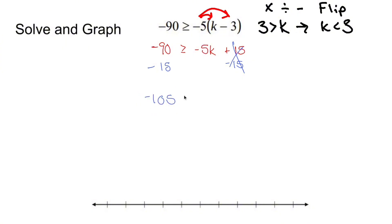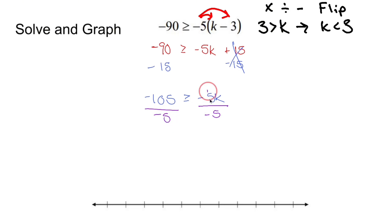Is k all by itself? No — negative 5 is being multiplied to k. Divide both sides by negative 5. When you divide both sides by a negative, flip the sign. Negative over a negative is positive: 105 over 5 is 21. K is all alone on the right. I don't like my variable on the right side, so if 21 is less than or equal to k, that means k is greater than or equal to 21.